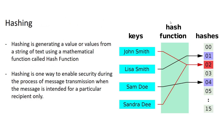Now we'll see what hashing is and how we can do it. Hashing is generating a value or values from a string of text using a mathematical function called a hash function. So hashing is all about the hash function and hash table — those are the two things in hashing. The hash function generates a different value from your original value and puts that generated value into the hash table. Hashing is also one way of enabling security during the process of message transmission when the message is intended for a particular recipient only.